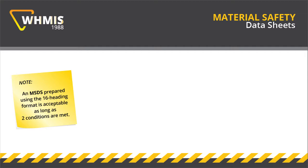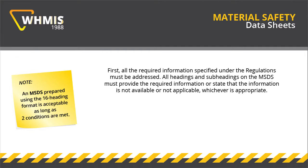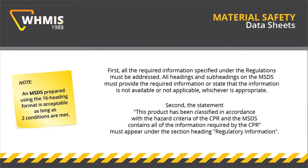Note that an MSDS prepared using the 16-heading format is acceptable as long as two conditions are met. First, all the required information specified under the regulations must be addressed, and all headings and subheadings on the MSDS must provide the required information or state that the information is not available or not applicable, whichever is appropriate. Second, the statement 'this product has been classified in accordance with the hazard criteria of the CPR and the MSDS contains all of the information required by the CPR' must appear under the section heading Regulatory Information.